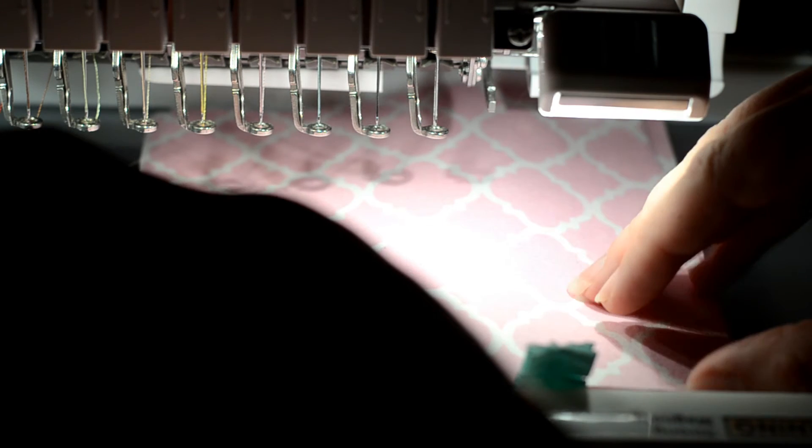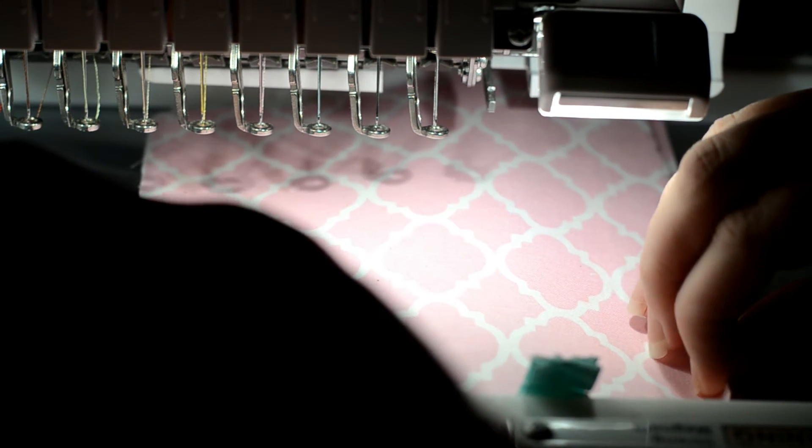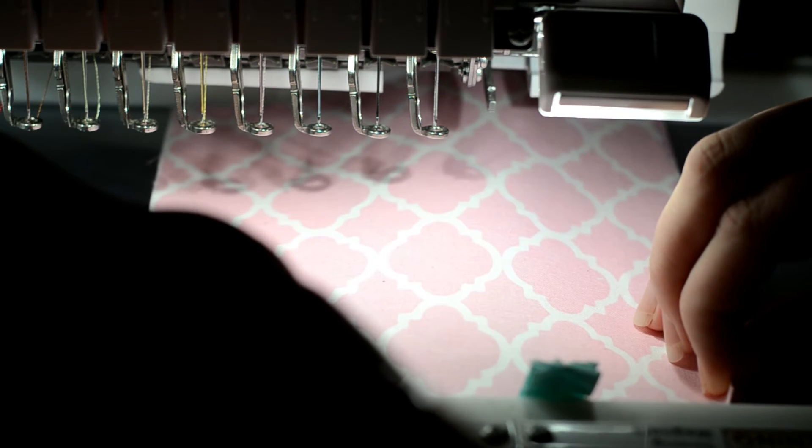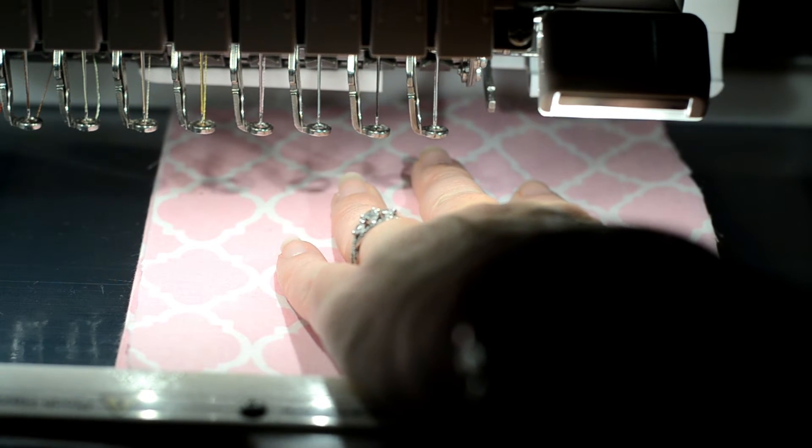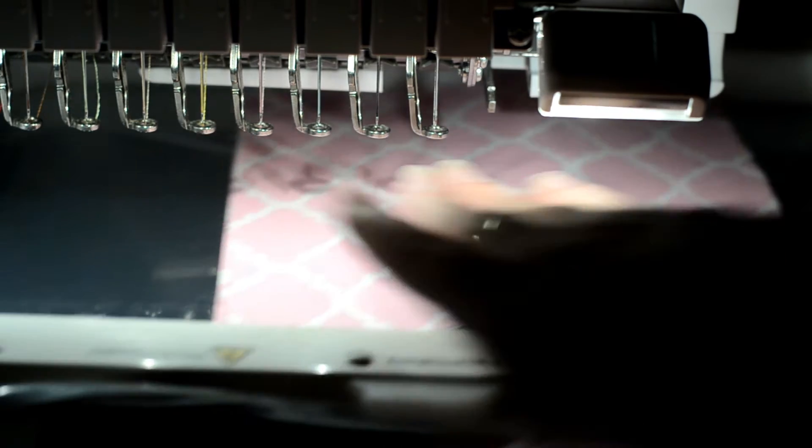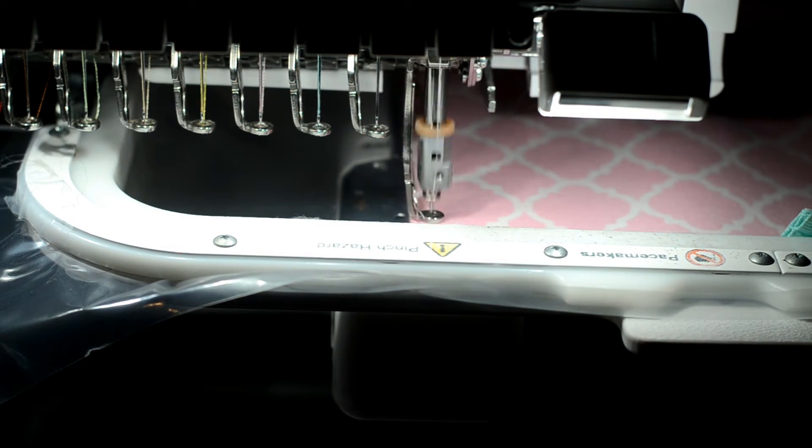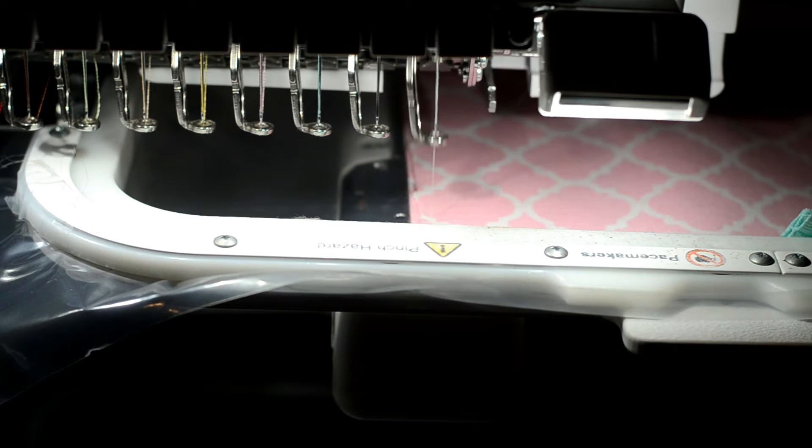Cover the dress outline with the other fabric panel or a piece of felt. Stitch the final tack down line.